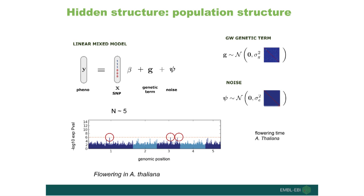There are different ways to leverage these models. The basic model has a phenotype explained by fixed effects, a kinship matrix as a random effect - such as the realized relationship matrix - and residual noise. For association testing, we compare a model where a variant has an effect to one where it doesn't, using a likelihood ratio test. For heritability estimation, we look at the ratio of variance explained by the structured component to the residual. And BLUP - the best linear unbiased predictor - is also derived from these models; in machine learning terms, this is a Gaussian process with a linear covariance function.